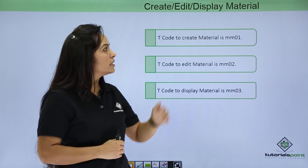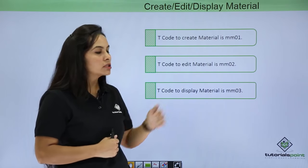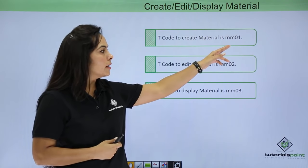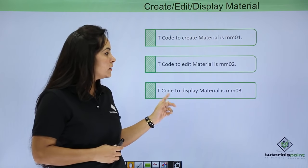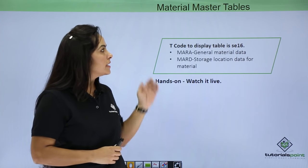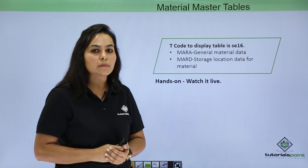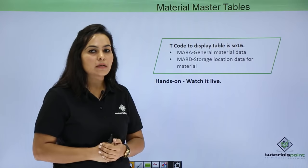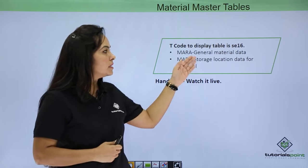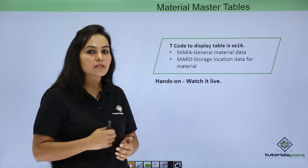Next is how to create, edit and display material — this will be done hands-on. To create material, the transaction code is MM01. In SAP, if you want to create, the suffix is 01; if you want to edit, suffix is 02; and if you want to display, suffix is 03. Next is the Material Master Table. Those 100 materials can be displayed in a table by going to T-code SE16N. The tables are MARA, which displays general material data, and MARD, which displays storage location data.